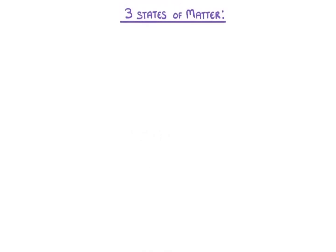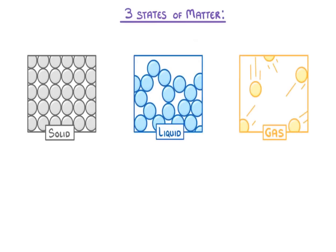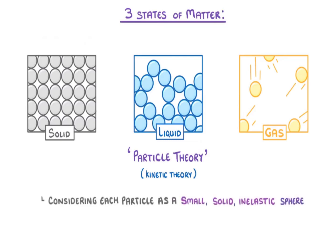In this video we are going to look at the three states of matter: solid, liquid, and gas, and see how substances can change from one state to another. To do this we are going to use a model called particle theory, or sometimes kinetic theory, which helps us explain how the particles in each state behave by considering each particle as a small, solid, inelastic sphere.